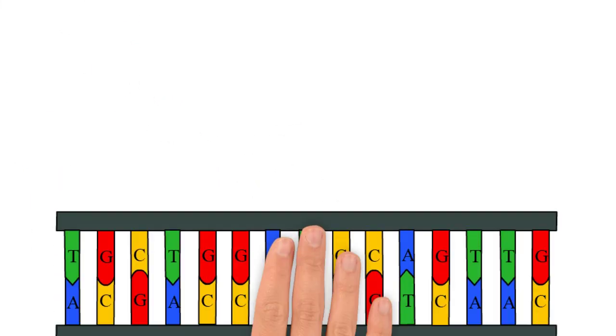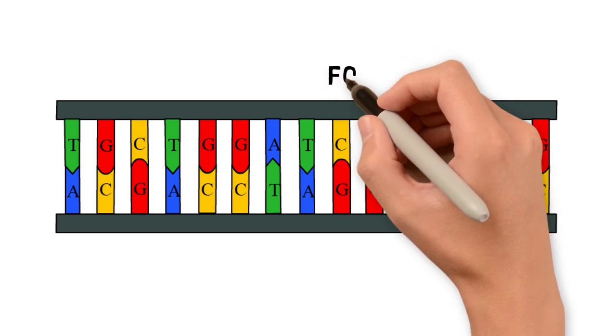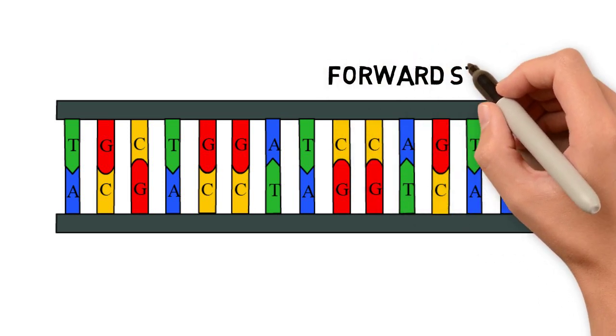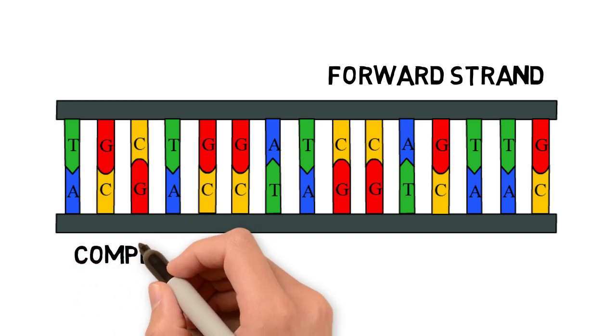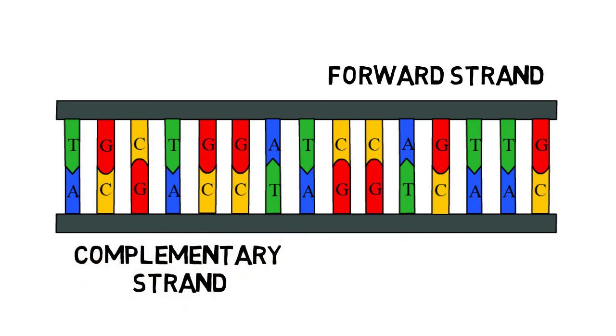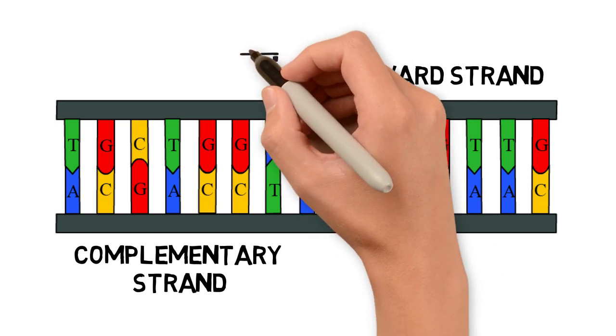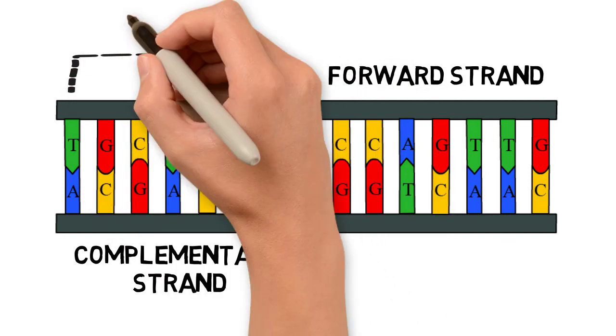However, the databases need to represent on which strand the genes are. Usually the genes that are on the other strand than the one that is shown in the database are said to be on the complementary strand, which also means that they are in the reverse orientation.